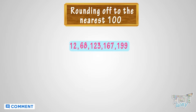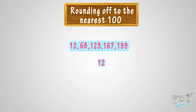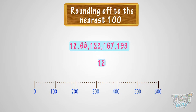Here we have a few numbers: 12, 68, 123, 167, 199. We have to round them up to the nearest 100. Let's start with 12. See the number line. Where can you fit 12 on this number line? It is somewhere between 0 and 100.